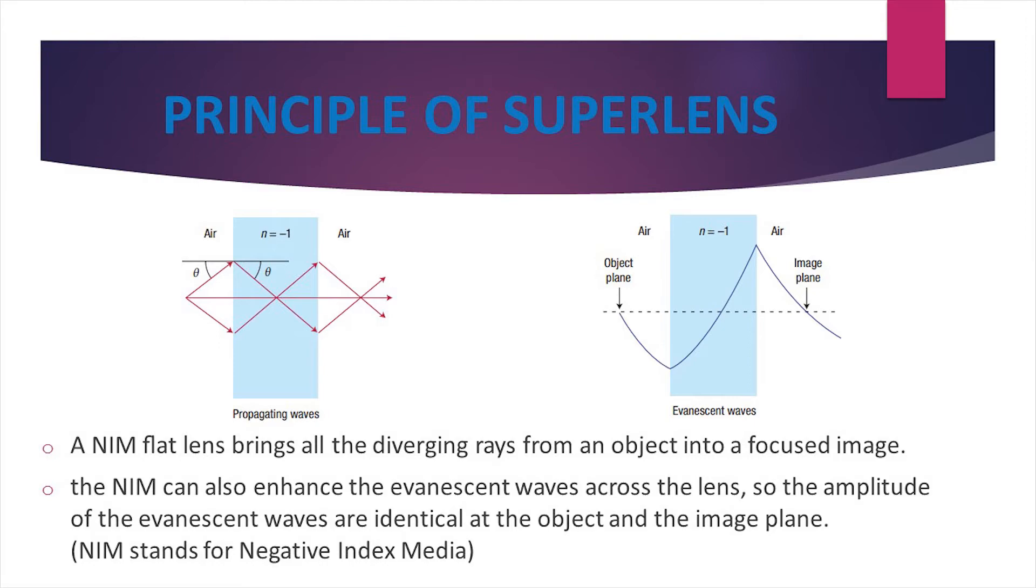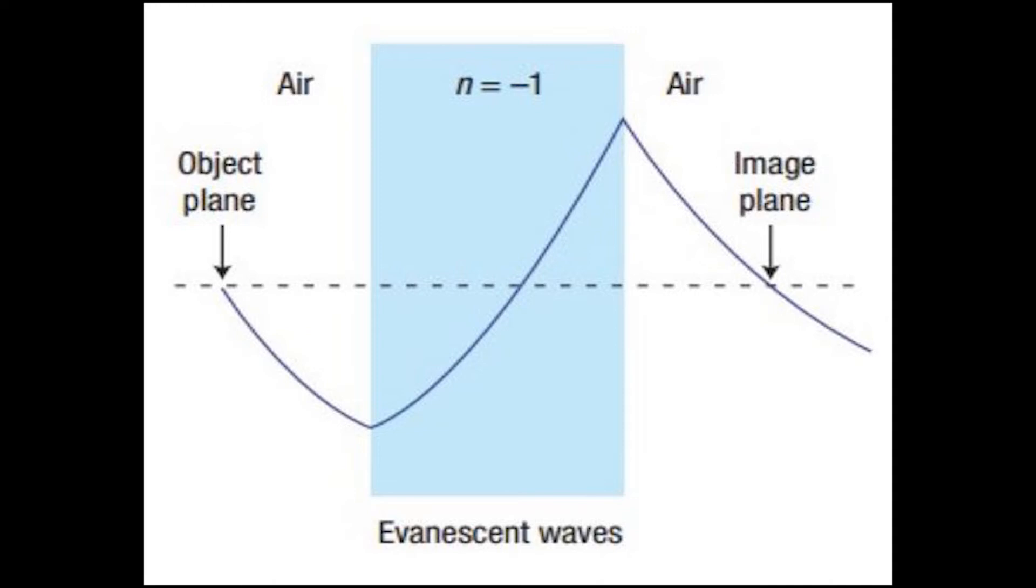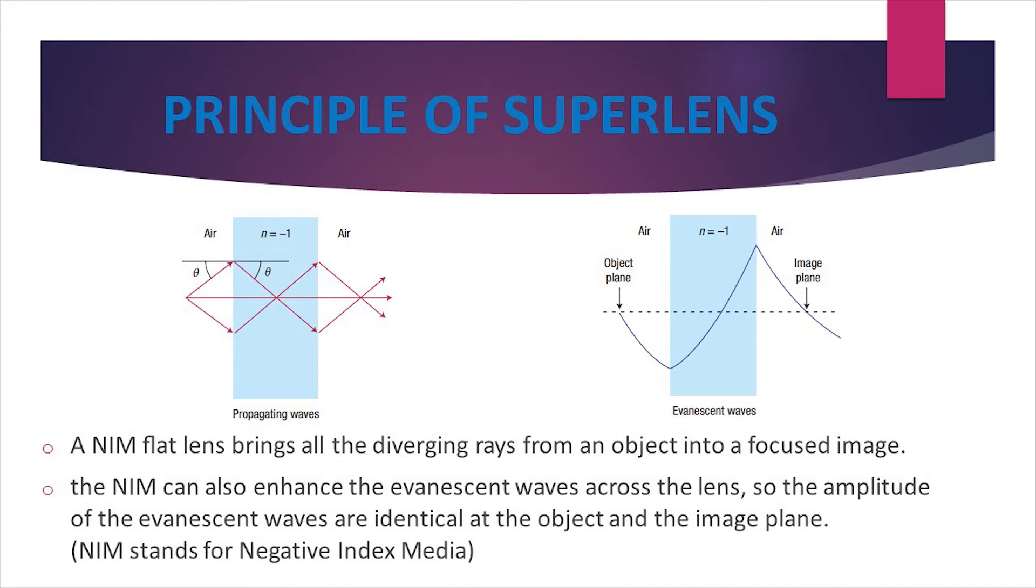Principle of superlens: Negative refraction at the interface of a negative and a positive index medium allows a flat layer of a NIM to focus all the diverging light rays from an object into two images, one inside the slab and one outside. The light emitted or scattered from an object includes not only propagating waves but also evanescent waves which carry the sub-wavelength details of the object. The evanescent waves decay exponentially in any medium with a positive refractive index, so they cannot be collected at the image plane by a conventional lens, resulting in a diffraction-limited image.